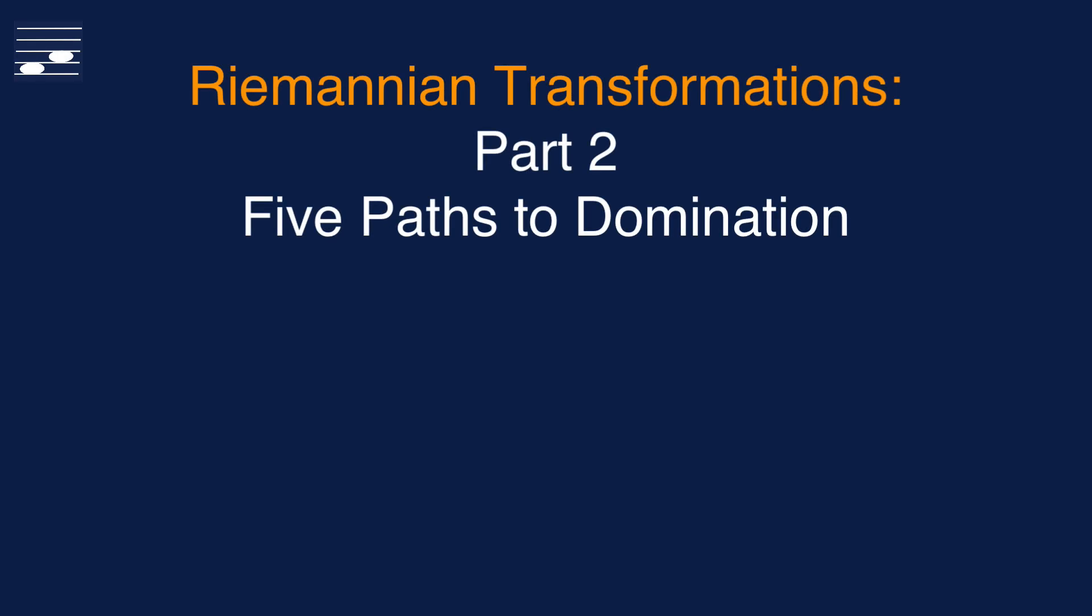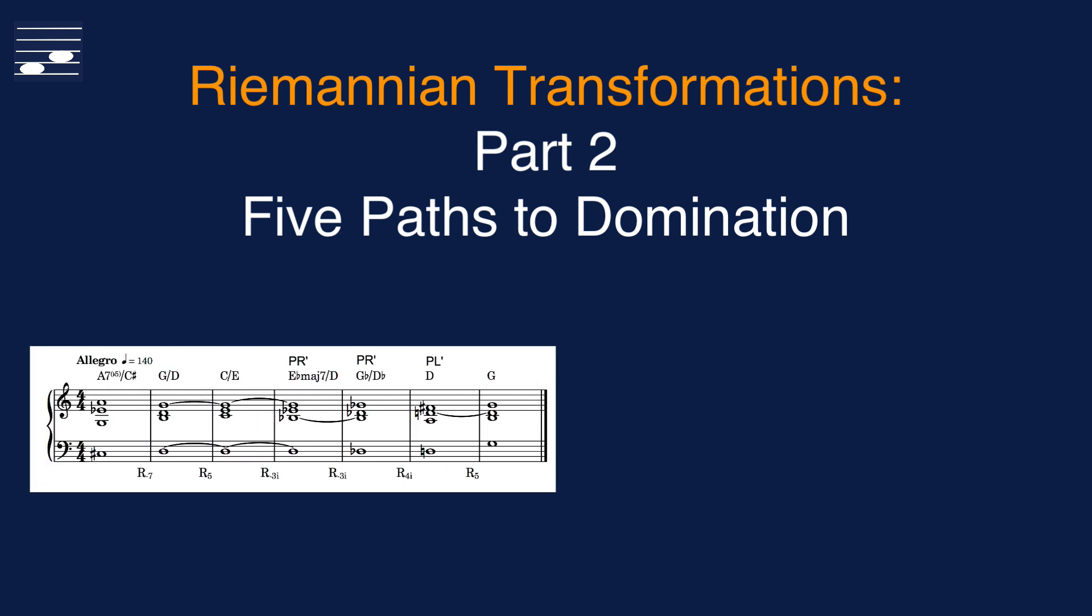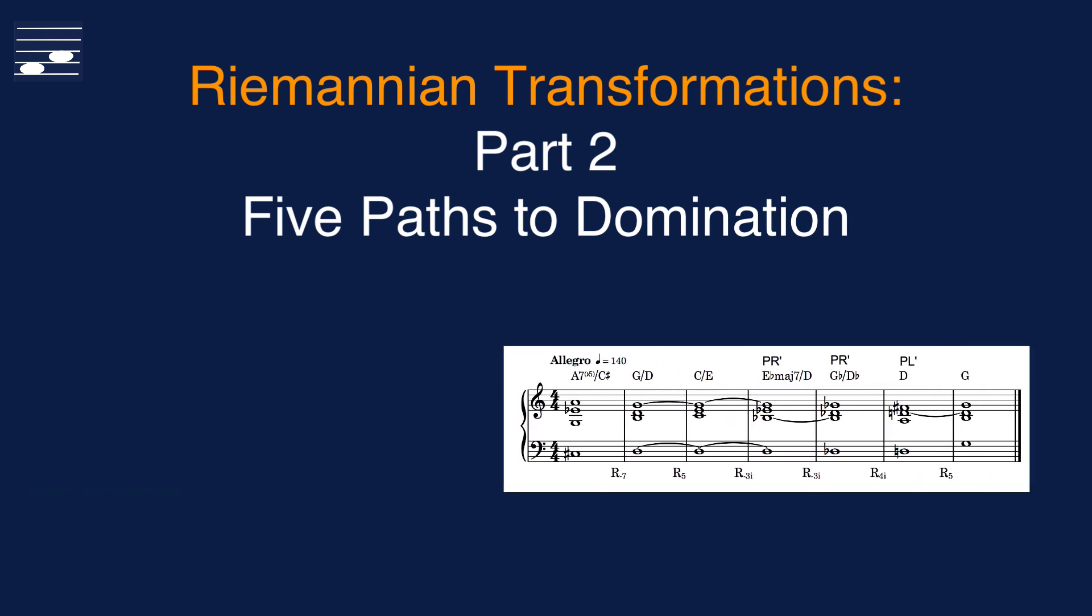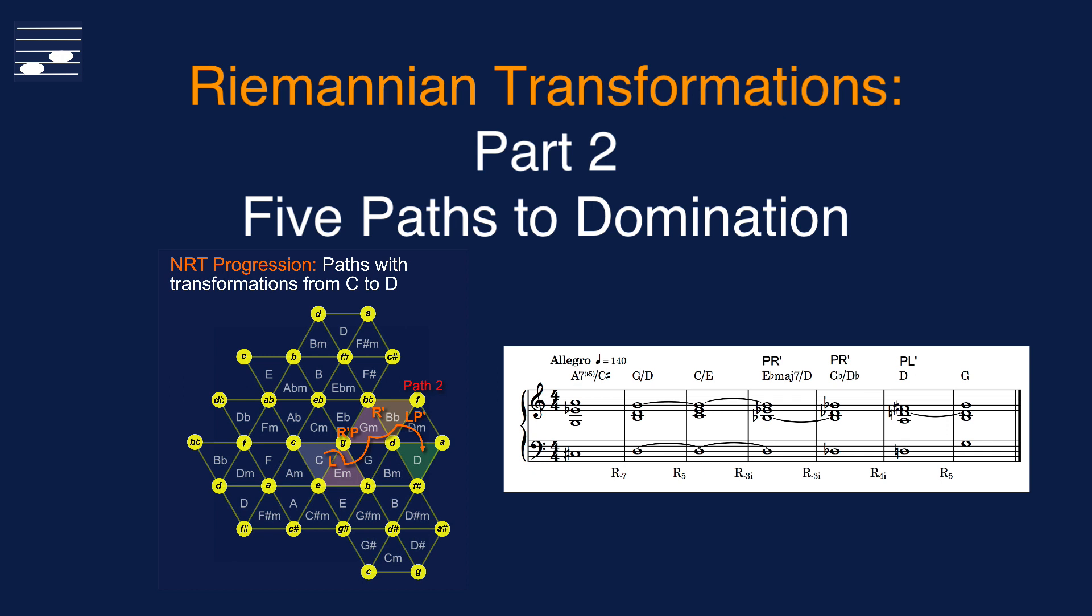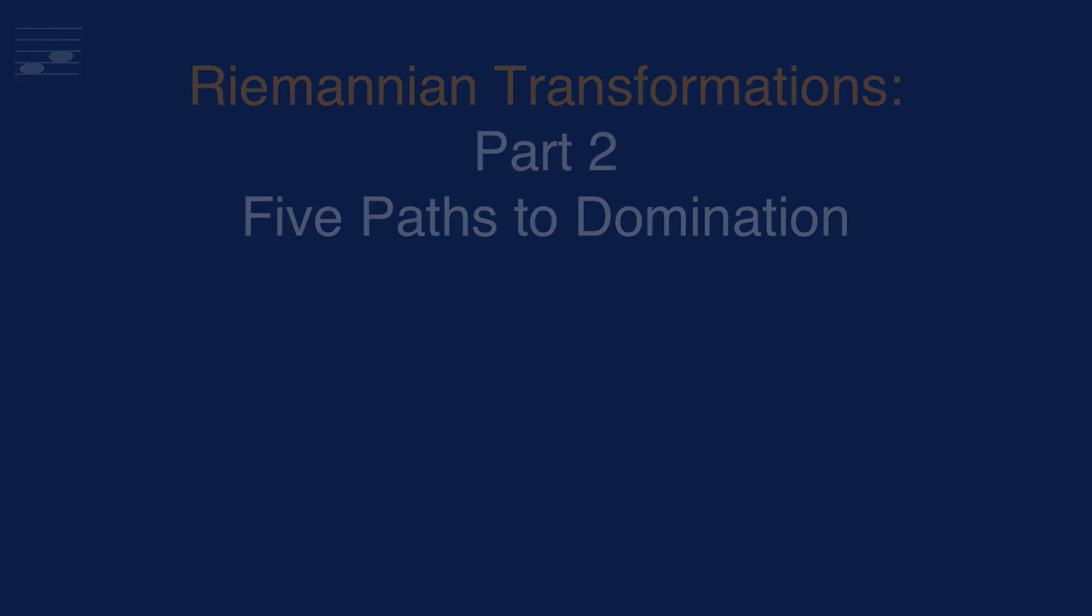Hello, in this tutorial we revisit Neo-Riemannian theory introduced in part 1 from this series, and apply elementary and compound transformations to a dominant pedal point chord progression. You'll see alternative paths in the Tornetz diagram and what these mean in terms of Schillinger root cycles. Short orchestral composition examples illustrate these concepts.